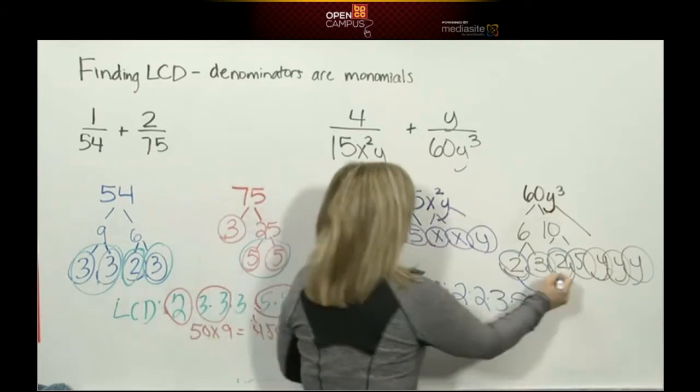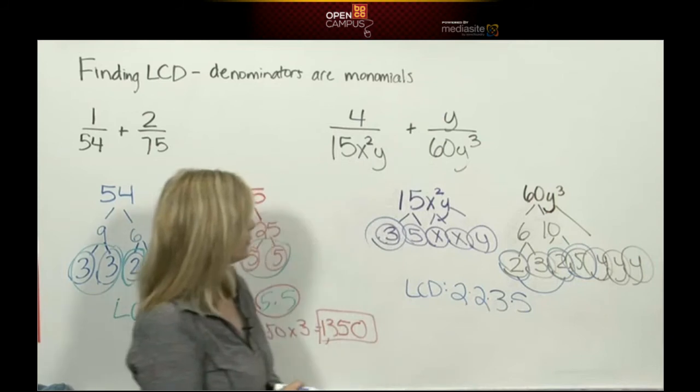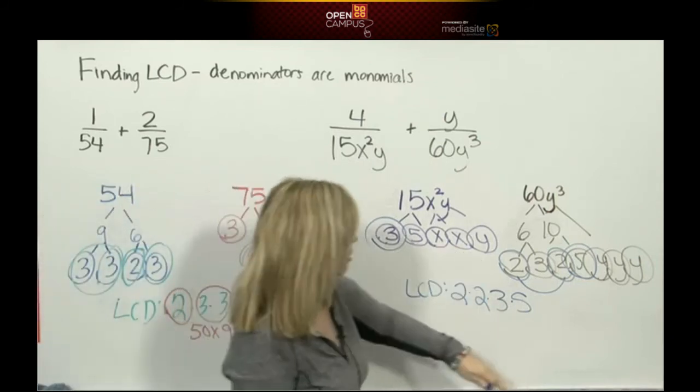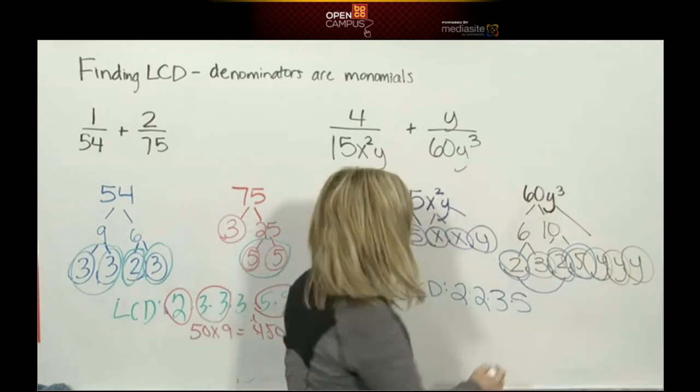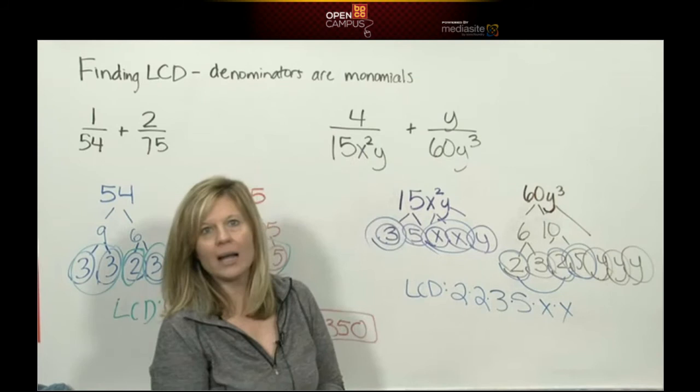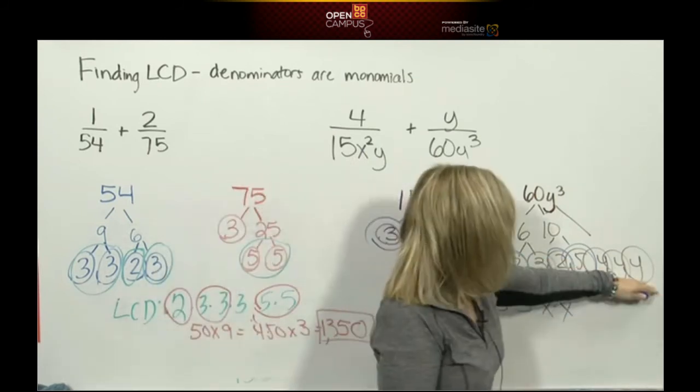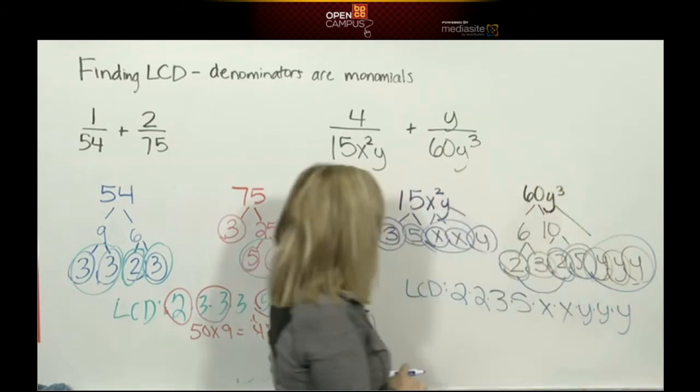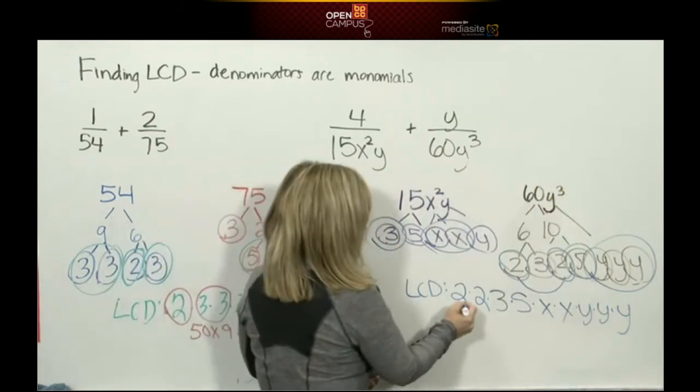Variables: x²—I have two x's here, I have no x's here. Well, I have to take the two x's, that's the most. y's: one y, three y's. Well, obviously three is the most.